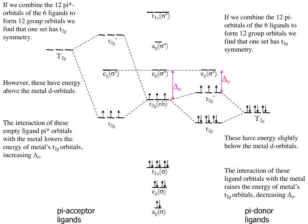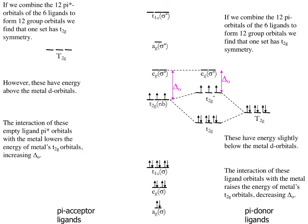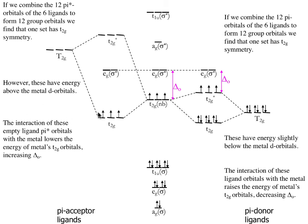Instead, the electrons from the complex fill those orbitals. The net effect is to lower the energy of the T2g orbitals. The T2g orbitals interact with our metal to form a new bonding and antibonding set, and the bonding set has essentially mostly d orbital character from our metal complex. So the net effect is to lower the energy of the T2g orbitals on the metal complex. And what does that do to the ligand field splitting energy? It increases it. So a pi acceptor ligand results in a lowering of the T2g orbitals, resulting in a larger ligand field splitting energy.